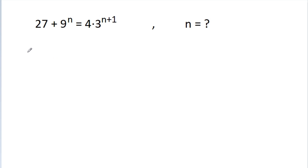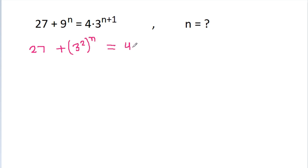We have 27 plus 9, which is 3 squared, power n, is equal to 4 times 3 power n plus 1.